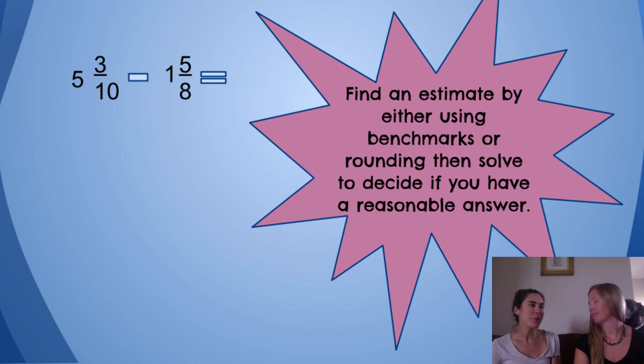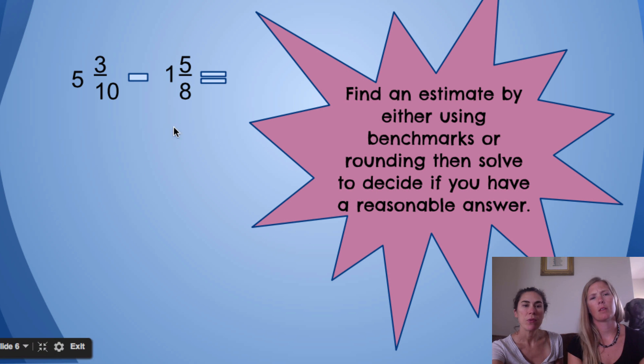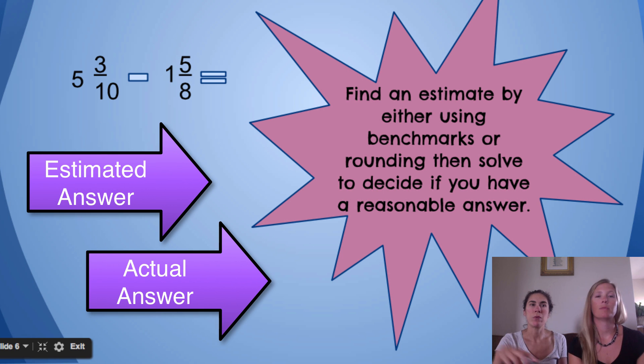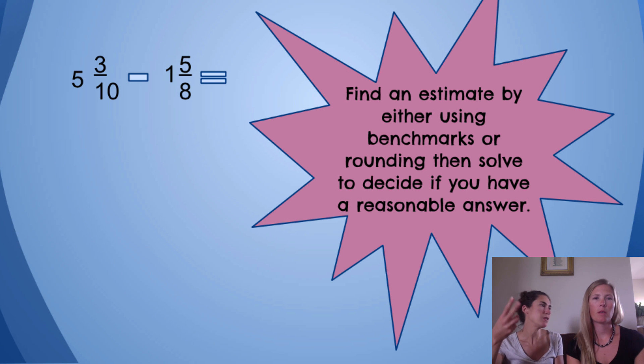So, now you are going to practice actually doing both. We want you to either use benchmarks or rounding to come up with an estimated answer first. So, look at these, come up with your estimated answer, and even put that in your journal, too. Estimated answer for this problem would be blank. And then you're actually going to solve and share what your actual answer is, too. So, you should have two answers, estimated and then actual.